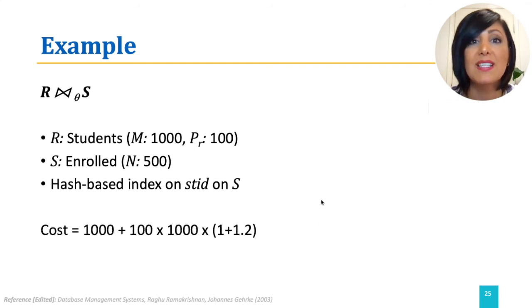This will bring us to the final cost, which is the sum of the cost of reading table R, which is 1000, plus the cost of matching a tuple with each tuple from R. The number of tuples in R is M times PR, which is 1000 times 100.